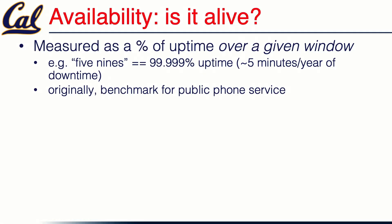When people started deploying web apps, the phrase everybody used was 'five nines,' because when the public telephone system was deployed in the US, their operational goal was 99.999% uptime — five nines. If you do the math, that means about five minutes a year of downtime.